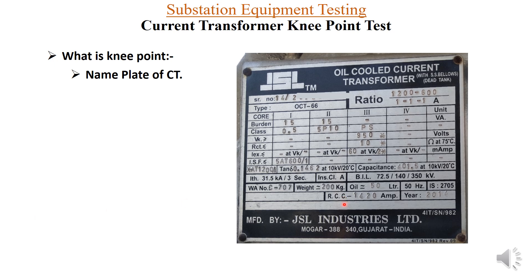Looking at the nameplate detail of this current transformer CT, it has four cores. Vk indicates the knee point voltage, which applies to the special protection core only — in this case, 950 volts. Iex is the excitation current; the value shown is 60 milliamperes at Vk divided by 2, indicating the maximum excitation current allowable up to the knee point voltage.